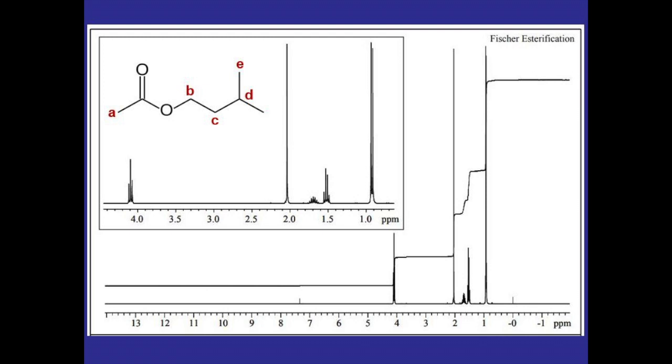Once you have all of your hydrogens labeled, you can then start analyzing the peaks. We already know that this large singlet is being produced by the hydrogens on the methyl group attached to the ester, so we can go ahead and label that as A.